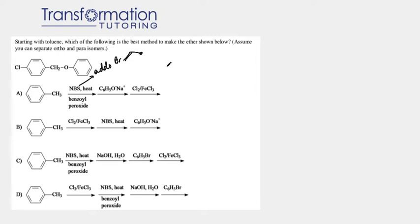Let's go ahead and start with our benzene ring. I'm just going to put a circle here to make it easier for me. CH3, and with NBS I'm going to add bromine.